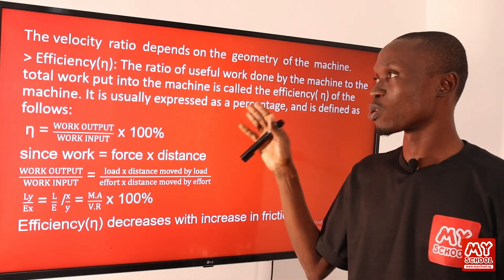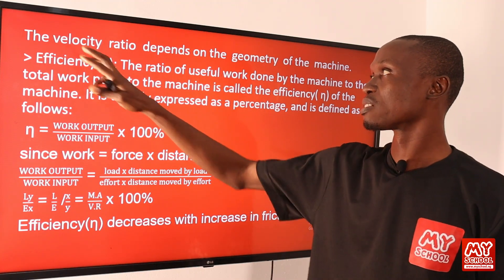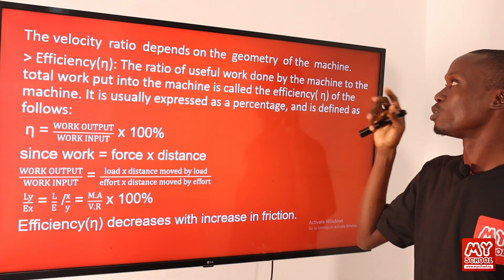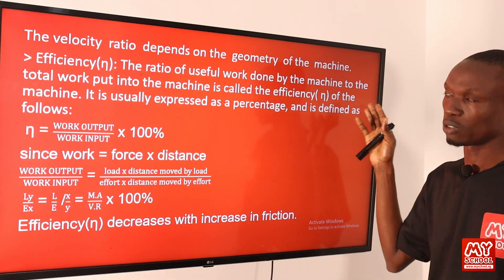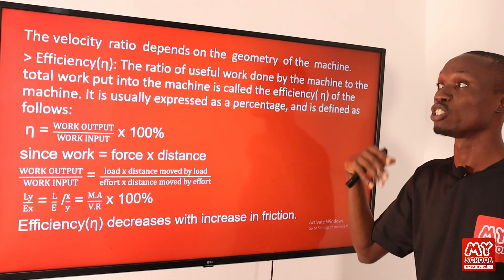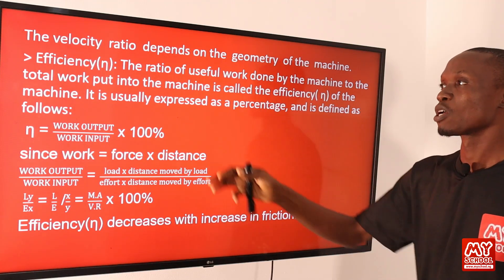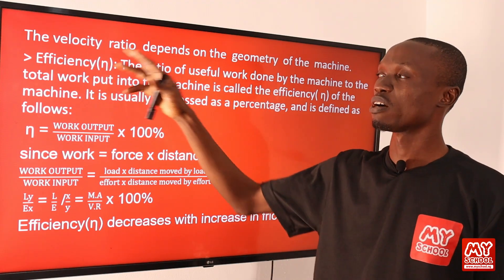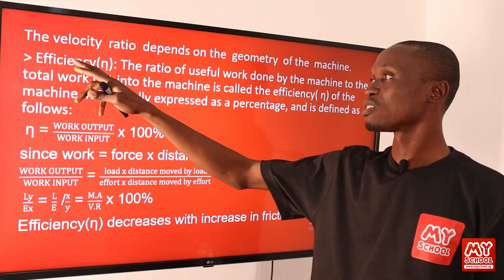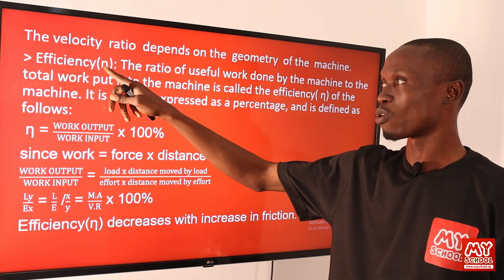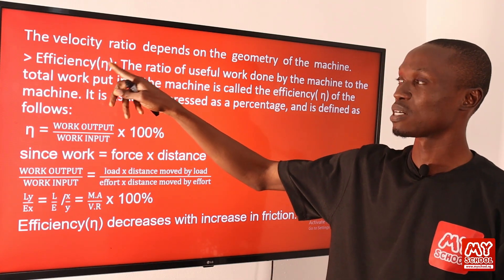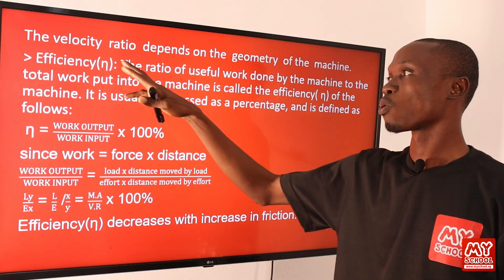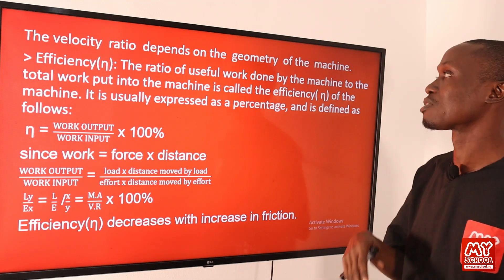Note that the velocity ratio of a machine depends on the geometry of the machine — geometry here represents the shape of the machine. The other term used when describing machines in physics is efficiency, represented by the symbol eta, spelled E-T-A. Efficiency is the ratio of the useful work done by the machine to the total work put into the machine.